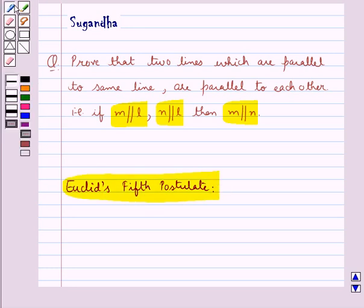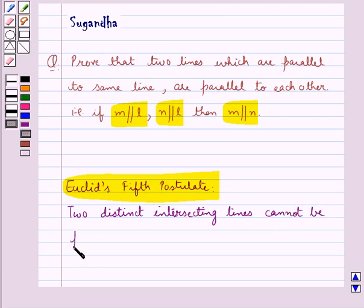According to this, we have two distinct intersecting lines cannot be parallel to the same line.